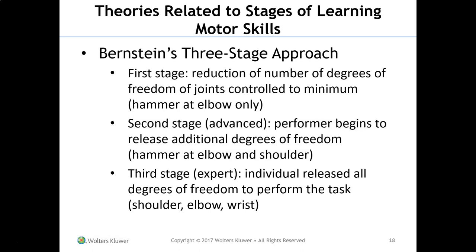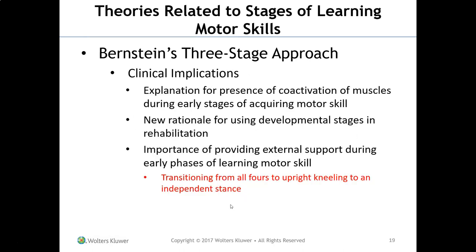Bernstein's approach is about minimizing the joints being worked on. For sit-to-stand, maybe just work on the knee first. In the second stage, work on the knee and hip. In the third stage, add the ankle. The clinical implications include: explanation for co-activation of muscles during early skill acquisition, a rationale for using developmental stages in rehab, and the importance of providing external support during early phases — transitioning from all-fours to upright kneeling to independent stance. You can't attempt a pistol squat on an uneven surface if you can't do a regular squat; you have to take it in stages.